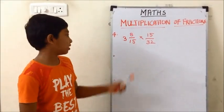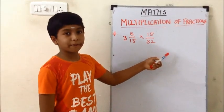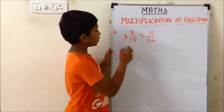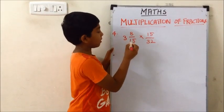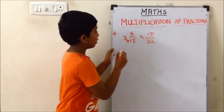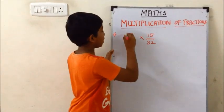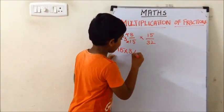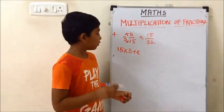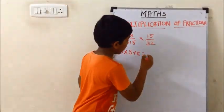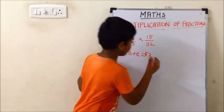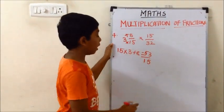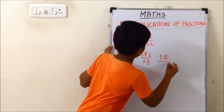Now I have taken one mixed fraction and one proper fraction. First we need to convert the mixed fraction into an improper fraction. The formula is: multiply the whole number by the denominator, then add the numerator. 15 into 3 plus 8 — 15 into 3 is 45, and 45 plus 8 is 53 — so we write 53/15. The other fraction is 15/32.